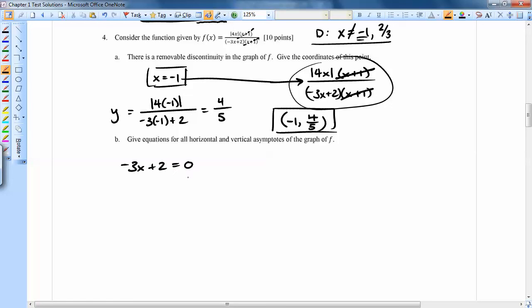3x plus 2 can't be 0, so when it is 0, that's where we get something messed up with the graph. And so if I solve this, we get 2 thirds equals x. So that's the vertical asymptote.